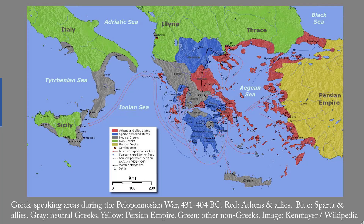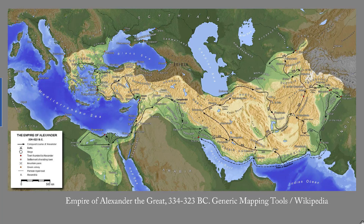These are the Greek-speaking areas during the Peloponnesian War, which was fought 431 to 404 BC. Athens and her allies are in red. Sparta and her allies are in blue. The others were not actually participating. And this is a map of the territory that Alexander the Great marched through — it's called his empire, even though he didn't live long enough to actually organize it into anything like an empire.